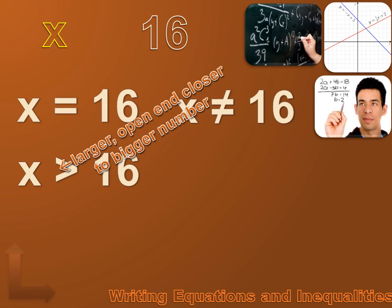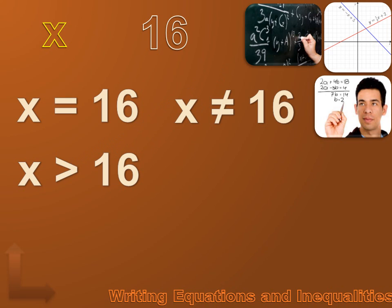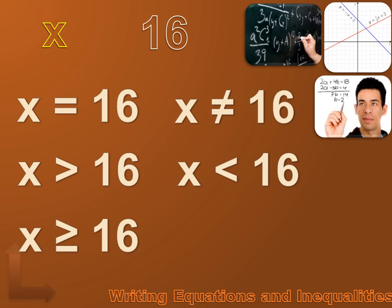The opposite is also true: the smaller end of the symbol is towards the smaller number. x could also be less than 16, and we'd write that by turning the greater-than symbol around so the larger end is towards 16. What if x were at least 16 — 16 or more? We'd write it as x is greater than or equal to 16. All we do is take that greater-than symbol and put half an equal sign under it.